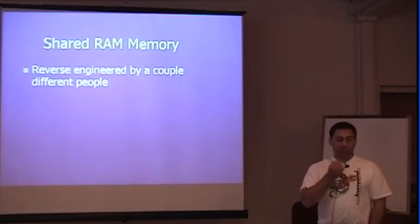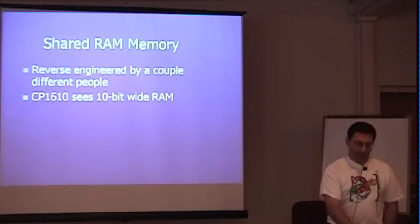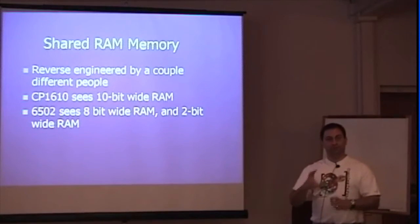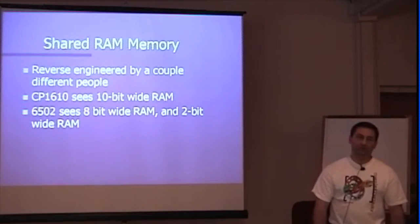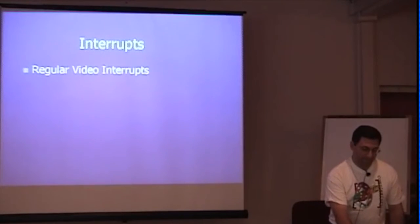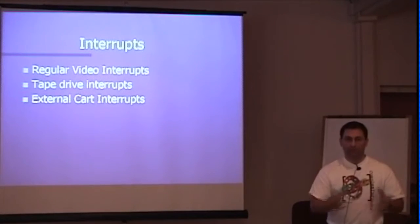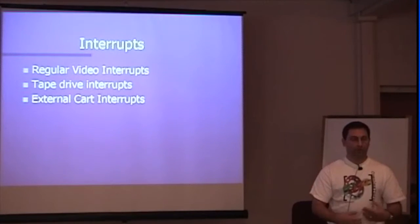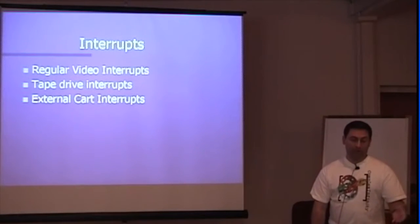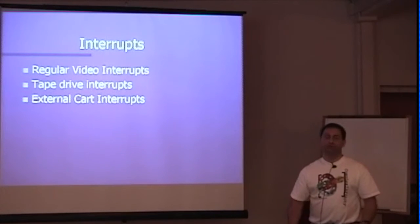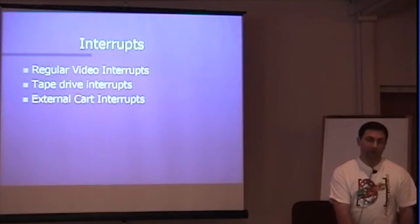Regarding the shared RAM: the CP1610 sees it as 10-bit wide RAM, while the 6502 has two different regions where it sees 8-bit RAM and then 2-bit RAM — the 2-bit RAM is mostly used to pass control information back and forth between the two processors. Another thing you have to get right is interrupts. Video interrupts are usually baked into the emulation framework. It gets more complicated when you have something like a tape drive doing interrupts, or in this case the machine architecture has the ability for an external partner to do interrupts even though they never used it.